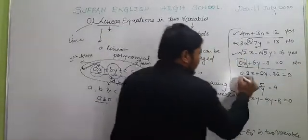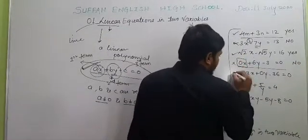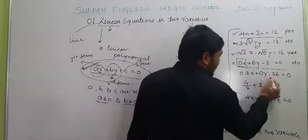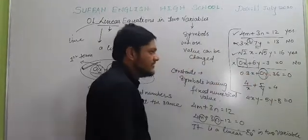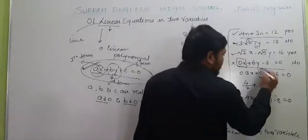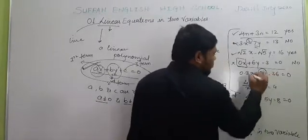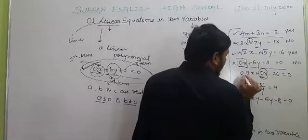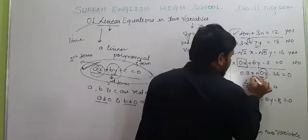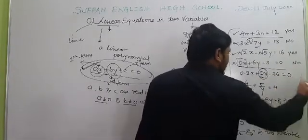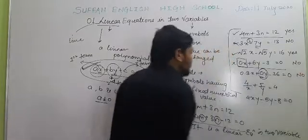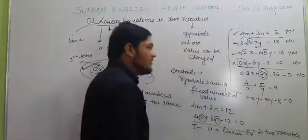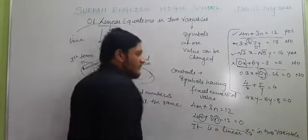Similarly, the next equation has 0·Y as the second term. Because the coefficient of Y is 0, the Y term becomes 0. The remaining term is 0.3X − 36 = 0. This is also a linear equation in one variable, not a linear equation in two variables.